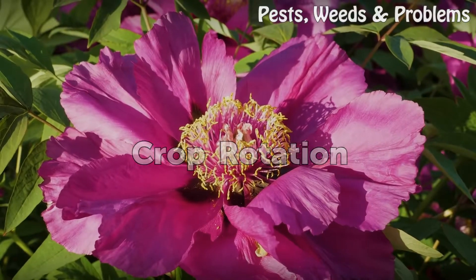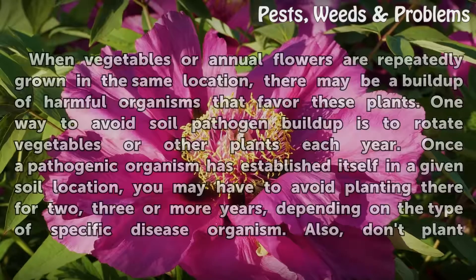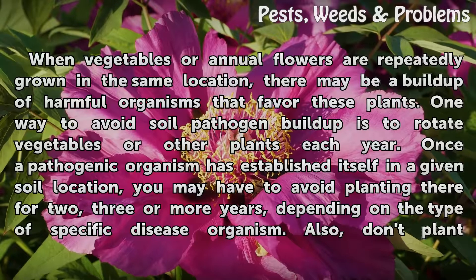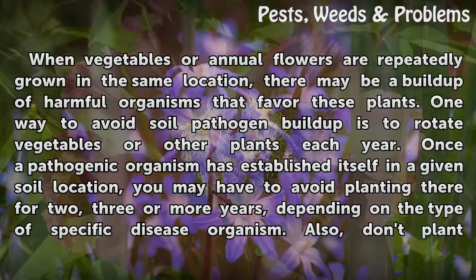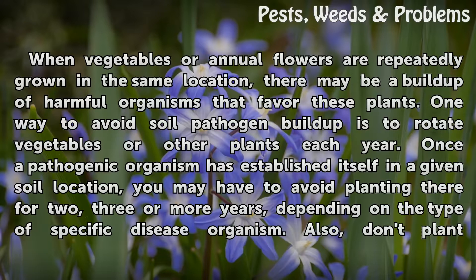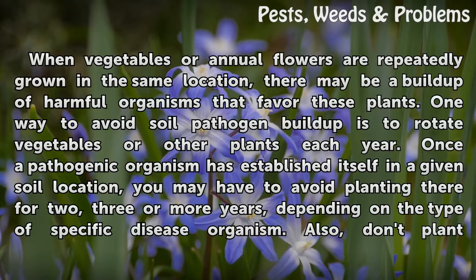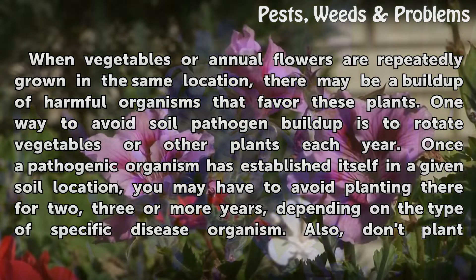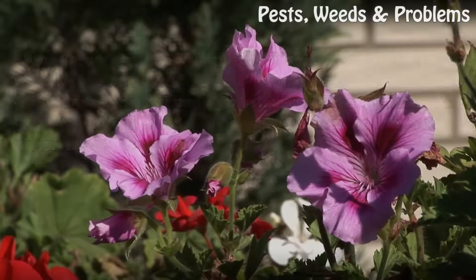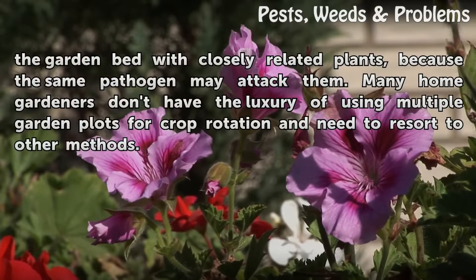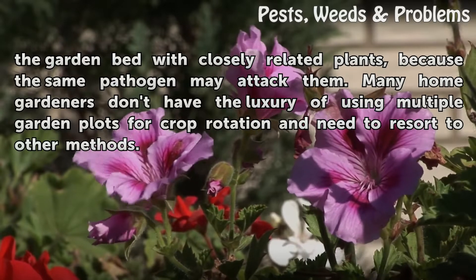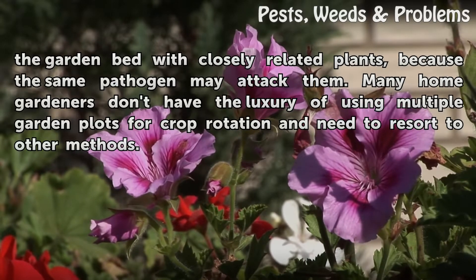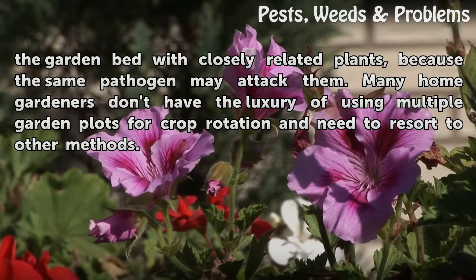Crop rotation: When vegetables or annual flowers are repeatedly grown in the same location, there may be a buildup of harmful organisms that favor these plants. One way to avoid soil pathogen buildup is to rotate vegetables or other plants each year. Once a pathogenic organism has established itself in a given soil location, you may have to avoid planting there for two, three, or more years depending on the specific disease organism. Also, don't plant the garden bed with closely related plants, as the same pathogen may attack them. Many home gardeners don't have the luxury of multiple garden plots for crop rotation and need to resort to other methods.